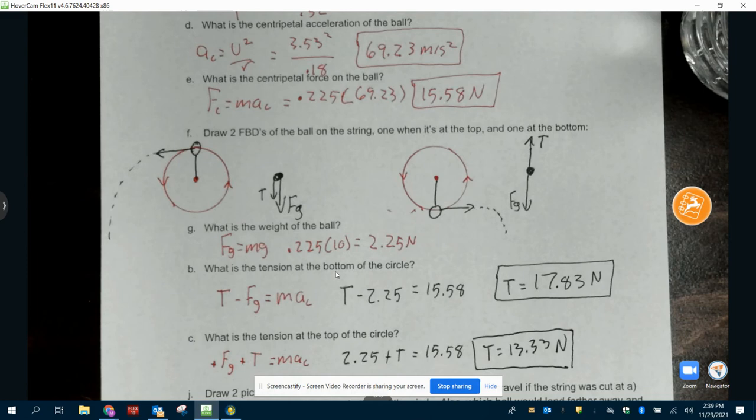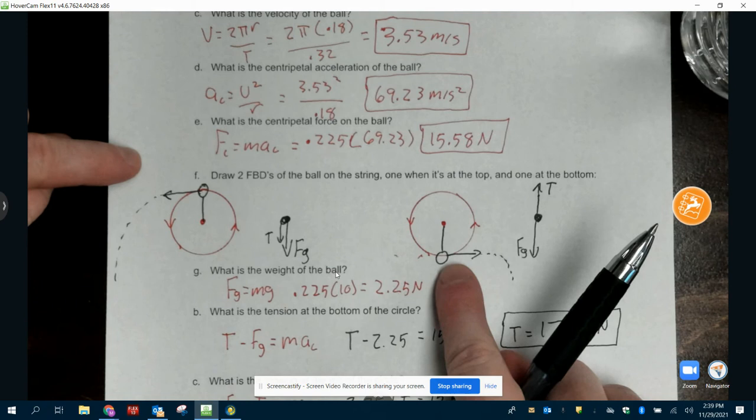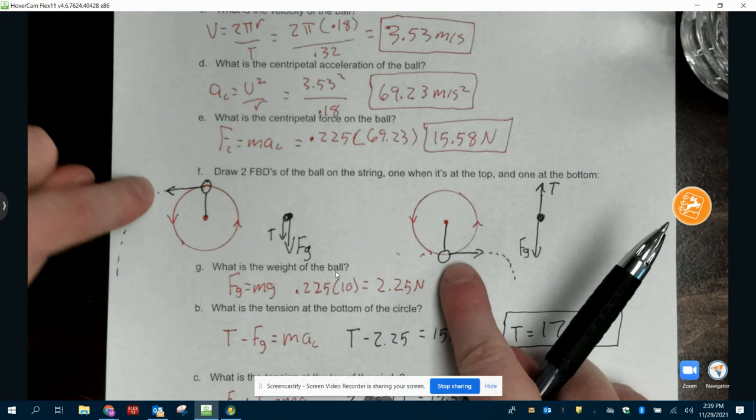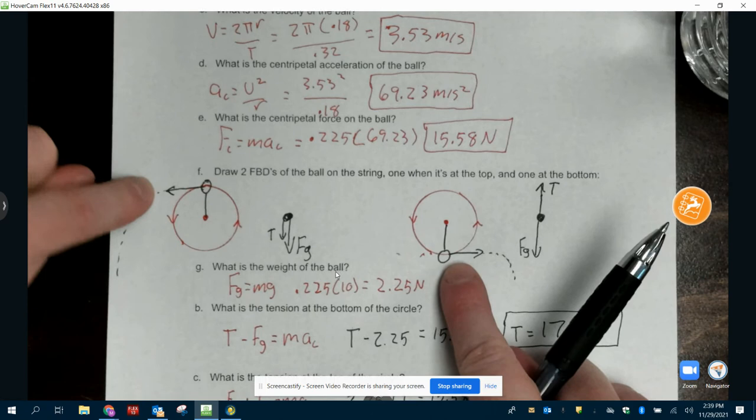Which ball would land farther away? The one that started higher up. Because they're going to have the same velocity. They're going just as fast in both scenarios. That hasn't changed. So the one that's higher is going to travel farther. So the one from the top. Top because higher. Questions?